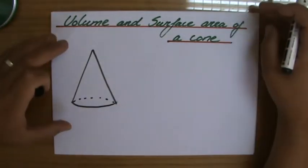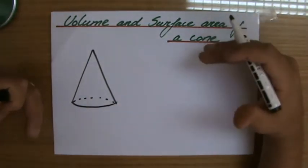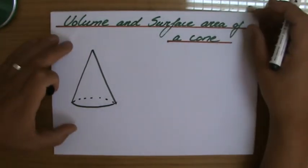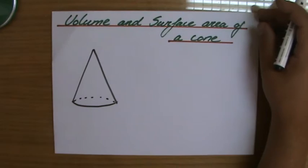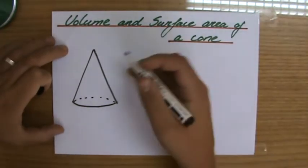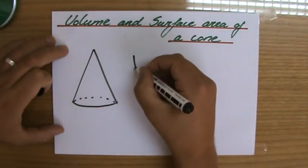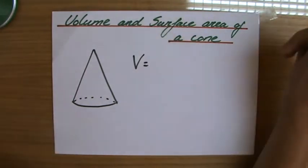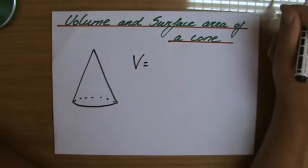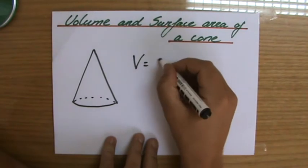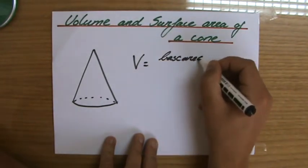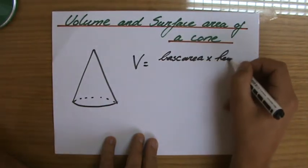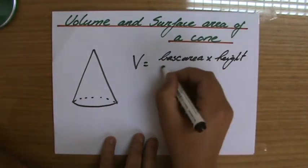The formulas, again like spheres and like pyramids, are given to you in the question but still it's good to know where they come from. The volume of a cone—do you remember how to find the volume of a pyramid? That was base area times the height and all of that divided by three.